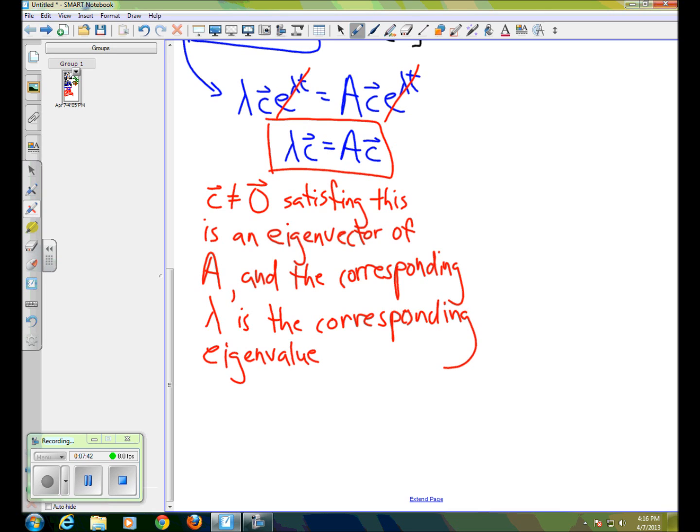Now, we'll look later at how to find the eigenvectors and eigenvalues. But for this particular matrix, it turns out that there are two eigenvalues, two eigenvectors.